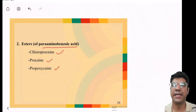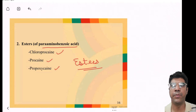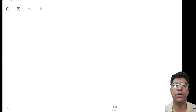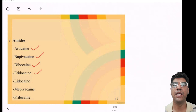Remember that esters are metabolized in the body through a process known as hydrolysis. The amide group examples include articaine, bupivacaine, dibucaine, lidocaine, tetocaine, mepivacaine, and prilocaine.